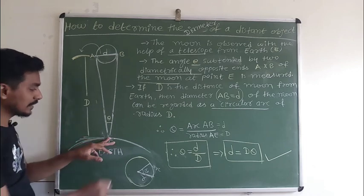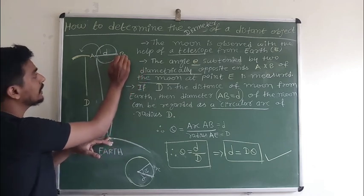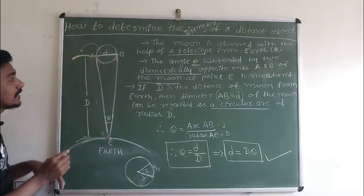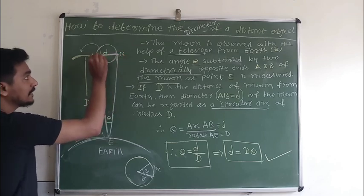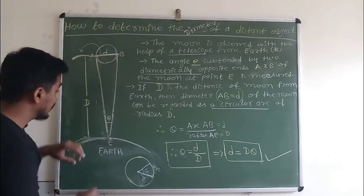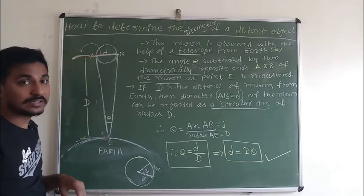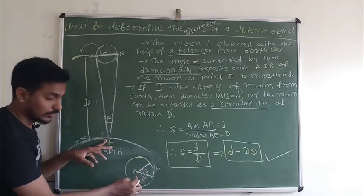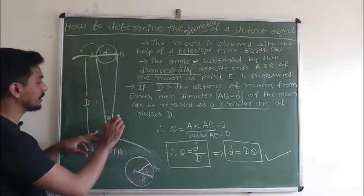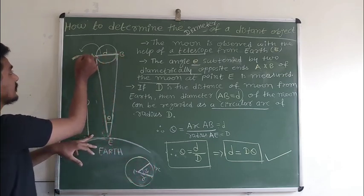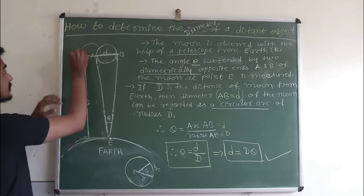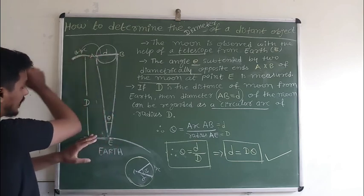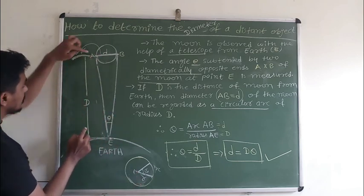Suppose I fix a compass here and make an arc — the arc will be like this. So we consider this diameter as an arc, and this particular distance we consider as the radius of the circle. This point E is here; from this we are making an arc like this. So this is our arc and this is our radius — it is our imaginary radius. We assume that it is a part of a circle.